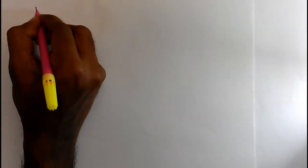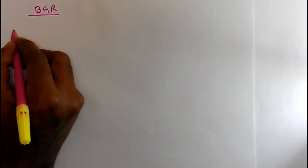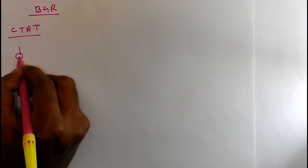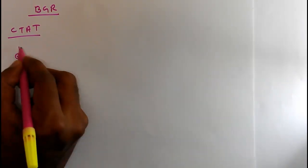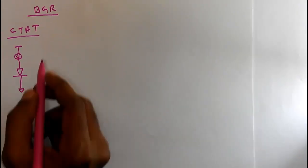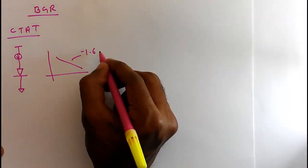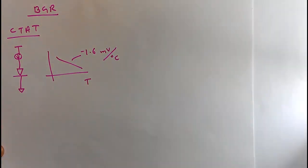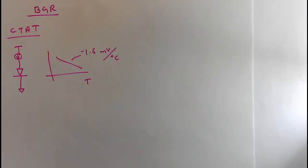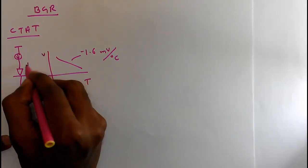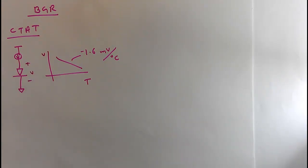As a summary of the band gap reference, we designed the CTAT — a constant current passing through a diode gives us the CTAT voltage. The slope we got is minus 1.6 millivolt per degree centigrade. Before going to the PTAT design, we can simulate this in Cadence. We will pass a constant current through a diode and plot the voltage across the diode, which will show it is a CTAT voltage.